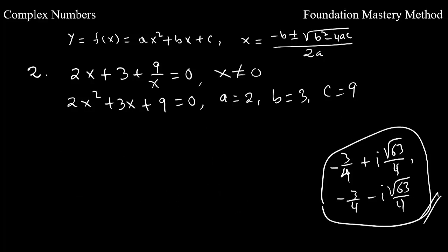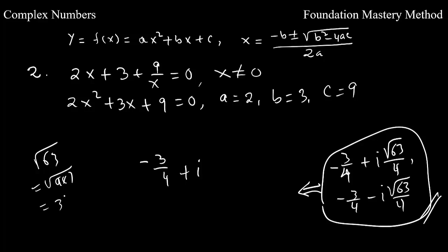We may further simplify these solutions. √63 can be written as √(9 × 7), which equals 3√7. So the final solutions are: −3/4 + i·(3√7)/4 and −3/4 − i·(3√7)/4.